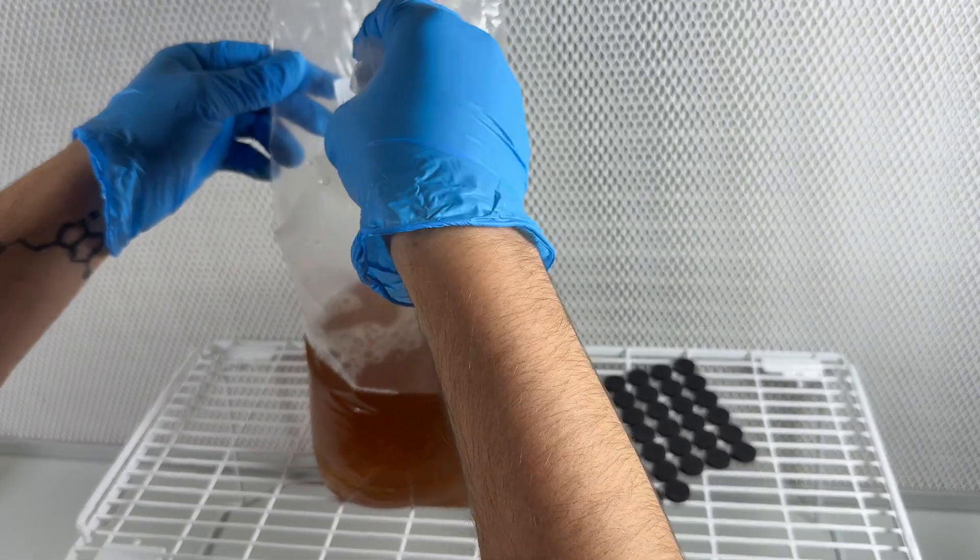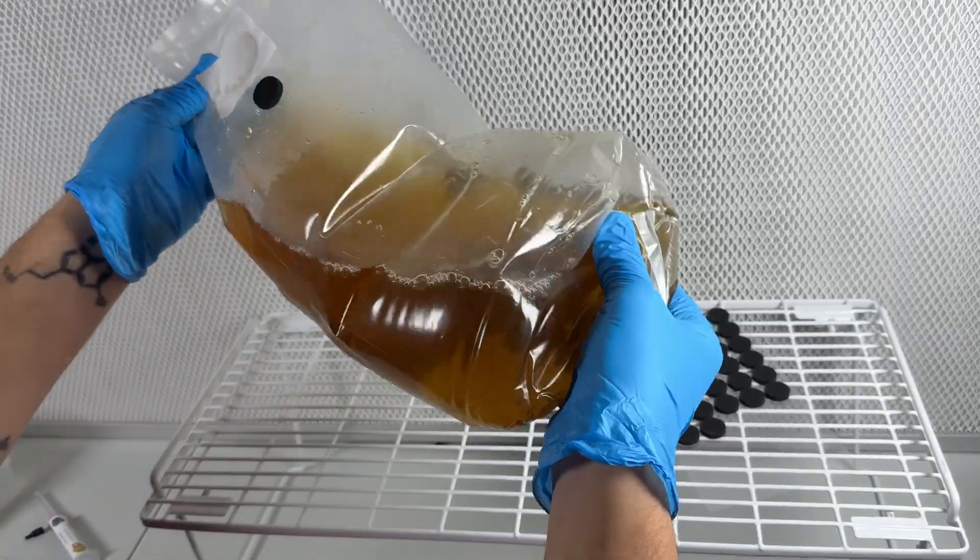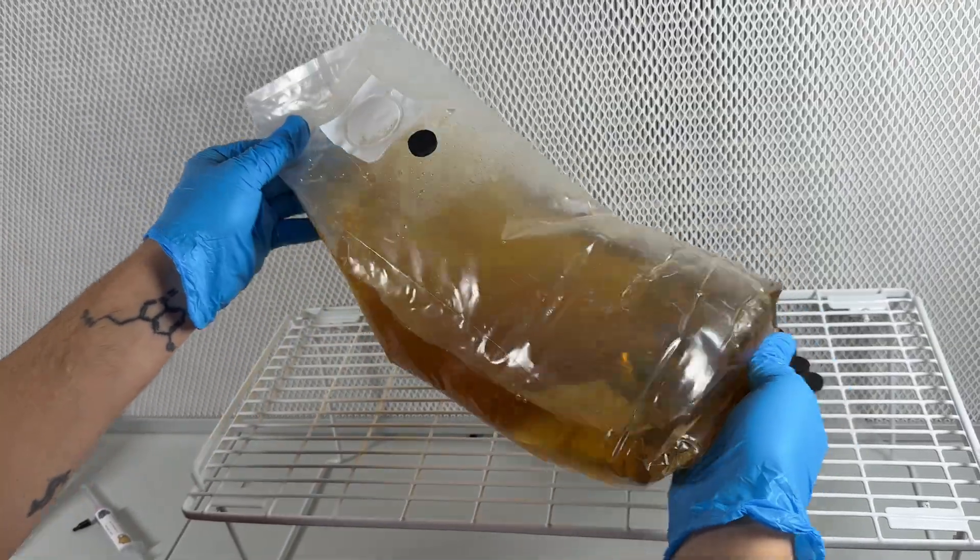After inoculating the bag, I just set it on a shelf in a warm room around 75 degrees Fahrenheit and let the mycelium grow. Then every day or two I'll just agitate the bag by splashing it back and forth.